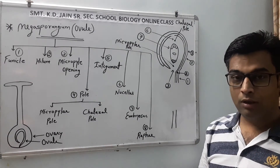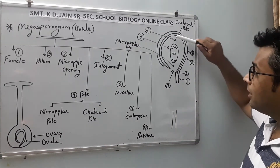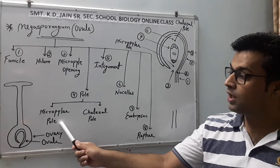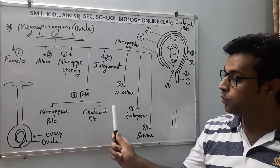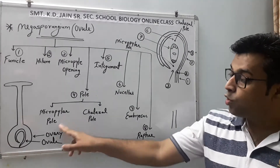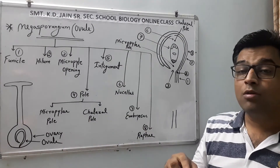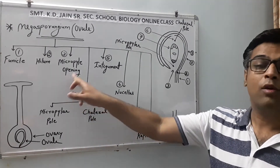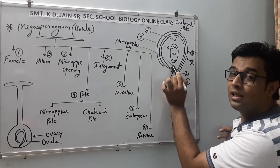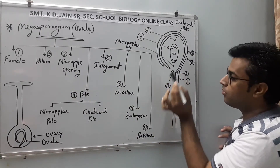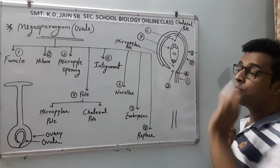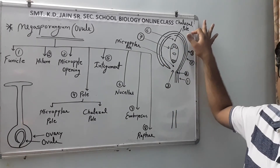There are two poles — one is up and one is below. One is the Micropylar pole and one is the Chalazal pole. The Micropylar pole is at the side of the Micropylar opening. The pole at the opposite end is the Chalazal pole.